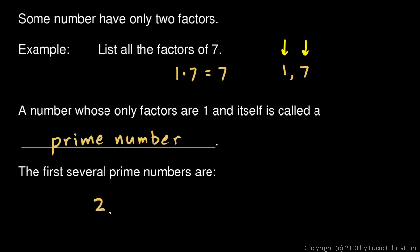Start with 2. 2 is the smallest prime number. And then 3, and then 5, and 11, 13, 17, and 19.